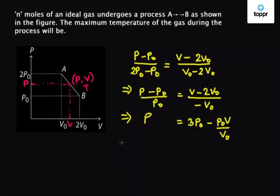Now we don't know how the temperature of this process varies. So multiply V on both sides such that we get a PV term on this side which we can then equate to nRT by using the ideal gas equation. So we have PV equals 3P0V - P0V² / V0.